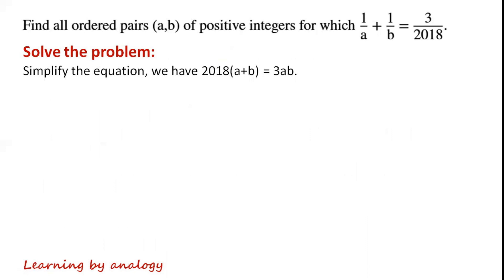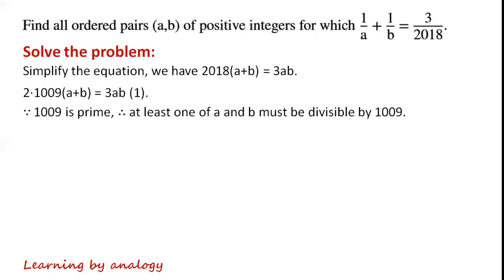We have 2018 times (A + B) equals 3AB. Since 2018 = 2 × 1009, and 1009 is prime, at least one of A and B must be divisible by 1009.